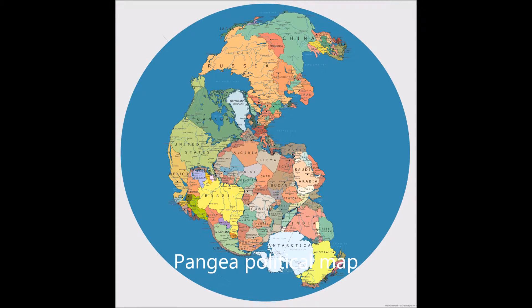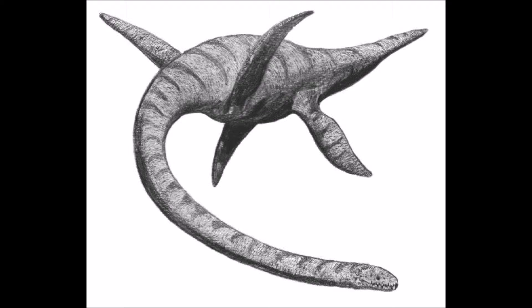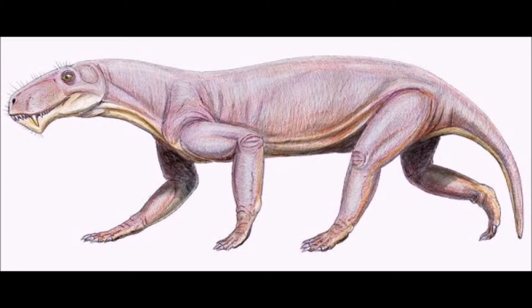The Triassic began 250 million years ago. During this time, the land was all bunched together and called Pangea. This is when the first dinosaurs and mammals evolved. Some examples of animals during this time are ichthyosaurs, plesiosaurs, amtheropsids, and archosaurs.